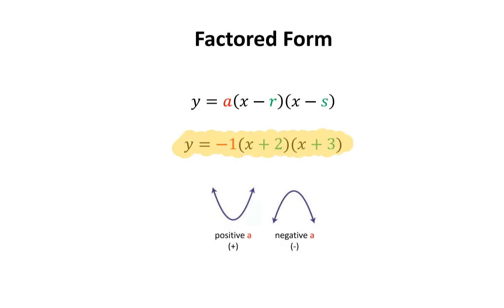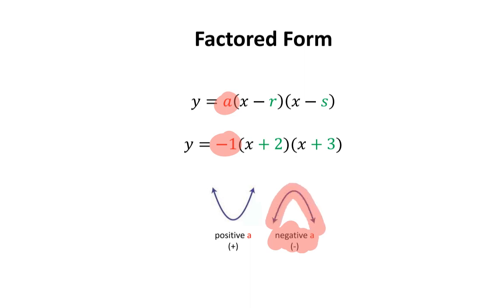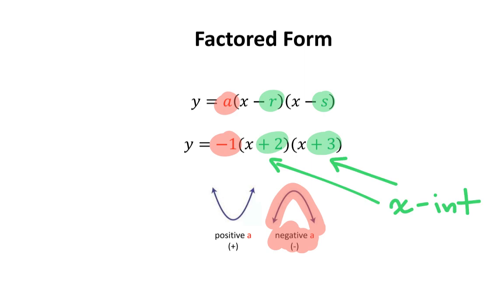Below, you'll see another equation of a quadratic relation in factored form. The variable a is negative 1, so the parabola must be frowning or opening downwards. The variables r and s are positive 2 and positive 3. When determining the x-intercepts, you need to change their signs — so positive 2 becomes negative 2, and positive 3 becomes negative 3. Therefore, the x-intercepts are negative 2 and negative 3.